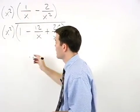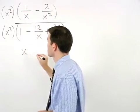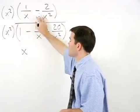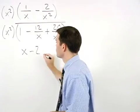x squared times 1 over x is x, and x squared times negative 2 over x squared is negative 2.